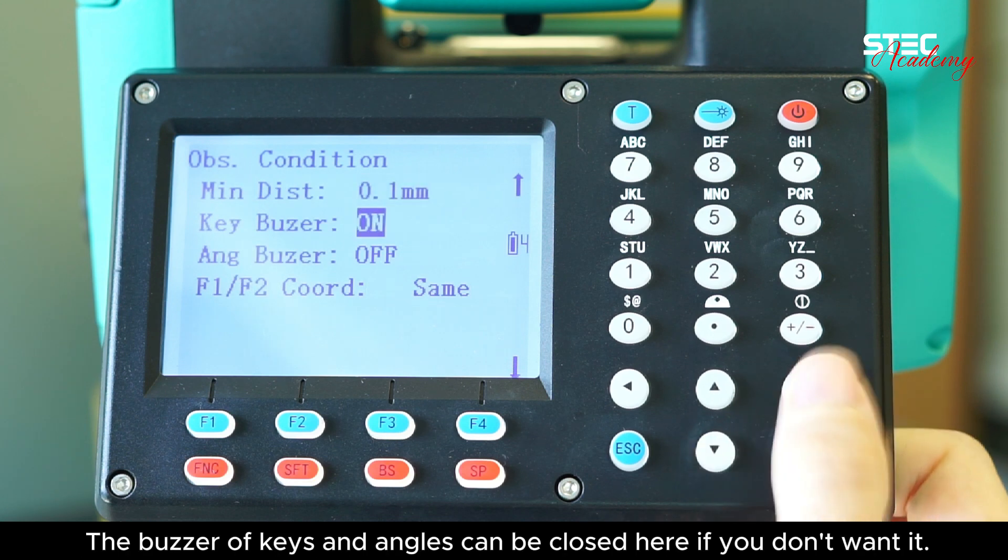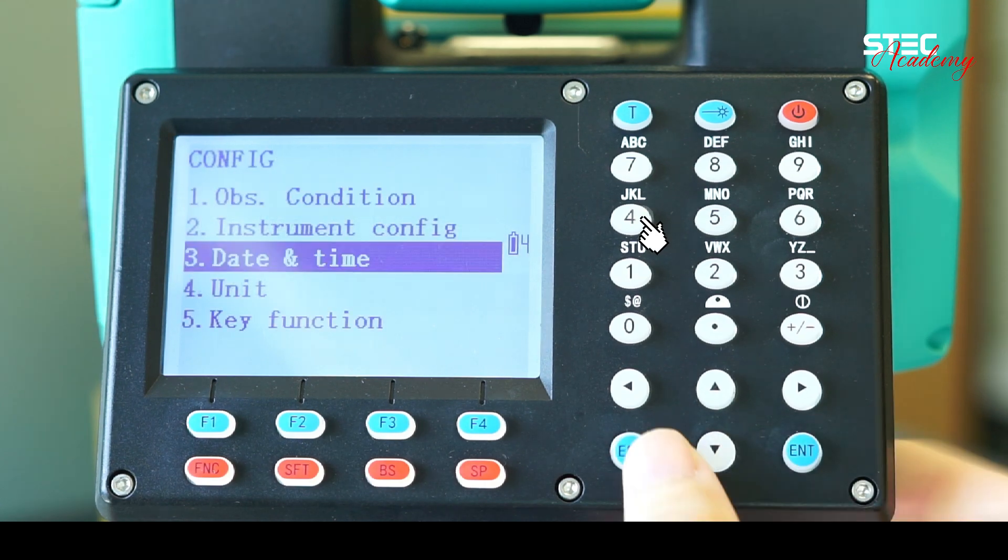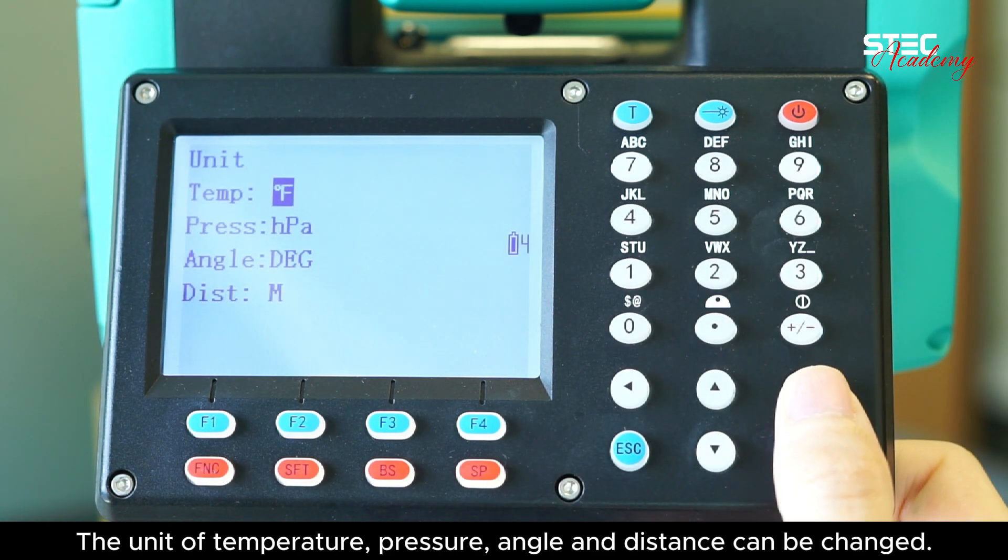The buzzer of keys and angles can be closed here if you don't want it. The unit of temperature, pressure, angle and distance can be changed.